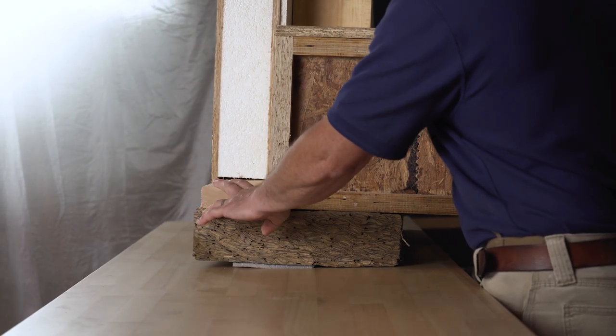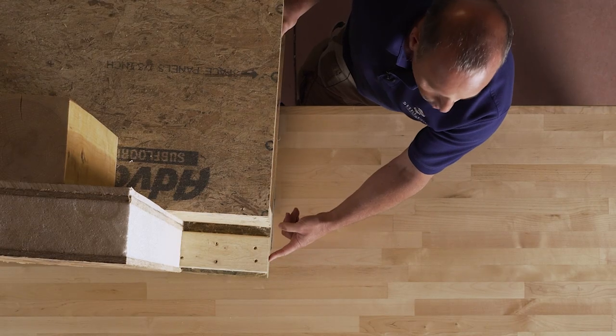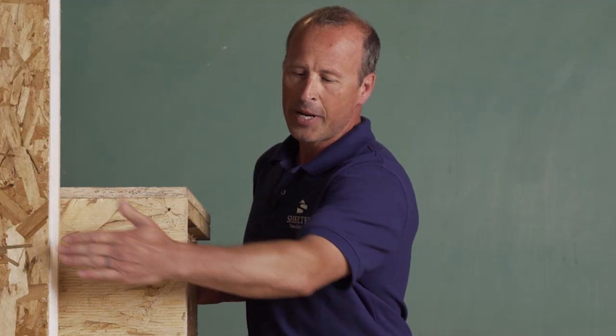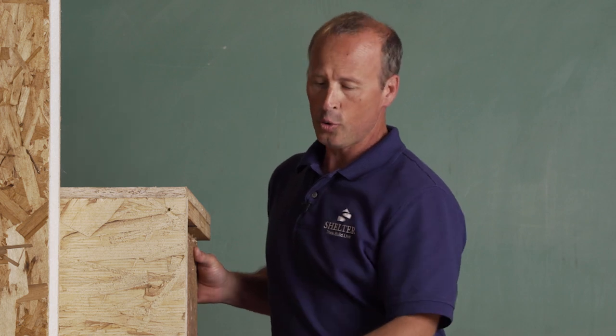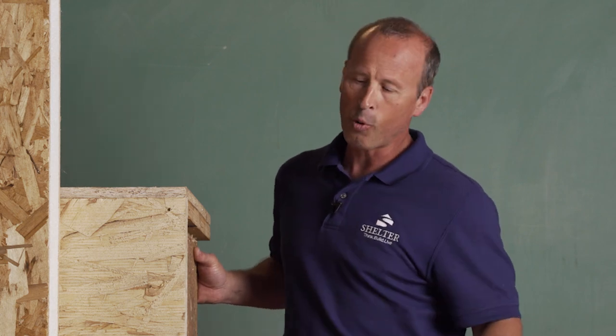On the outside of the sill plate we've got a piece of framing lumber that is mechanically fastened and glued to the sill plate. This is an important connection between the structural insulated panel and the sill plate. The sill plate of course is bolted to the foundation using the Titan HD fasteners that we install after the pour.